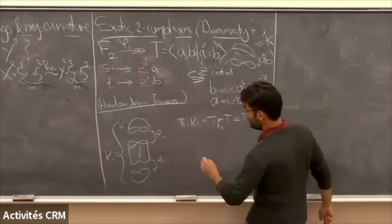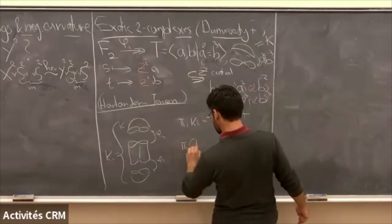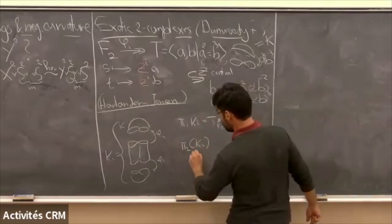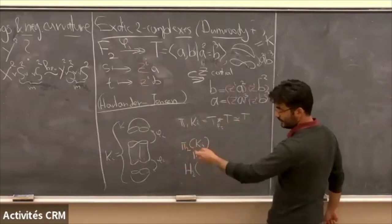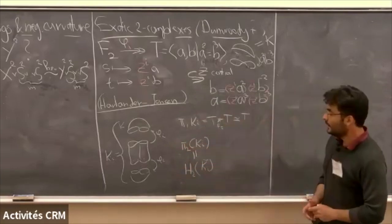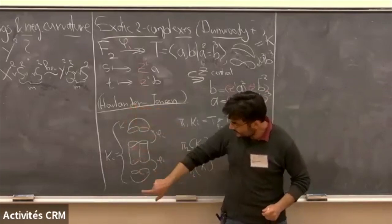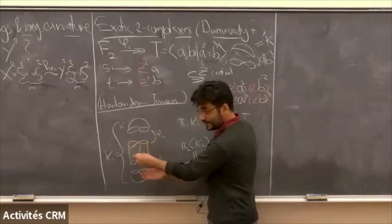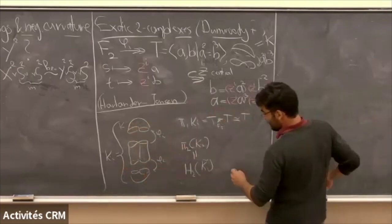But the second homotopy group turns out to be different as a module. If you think about what π₂ of this complex is — that's H₂ of the universal cover. The universal cover is the universal cover of K together with the universal cover of K, glued along a cover — not the universal cover, but the trefoil cover — of the figure eight times interval in the middle. And if you write down what the Mayer-Vietoris sequence says, it tells you...